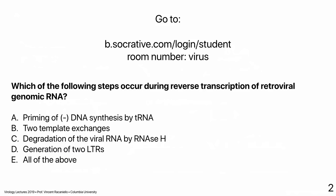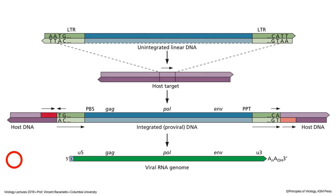The next question: which of the following steps occur during reverse transcription of retroviral genomic RNA? Priming of minus-strand DNA synthesis by tRNA; two template exchanges; degradation of viral RNA by RNase H; generation of two LTRs; or all of the above. The answer is all of the above. tRNA primes minus-strand synthesis (the first piece), two template exchanges occur at each end, RNase H degrades the RNA template, and two LTRs are generated by the whole process.